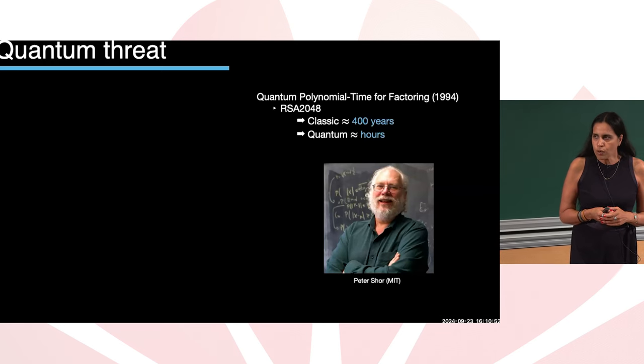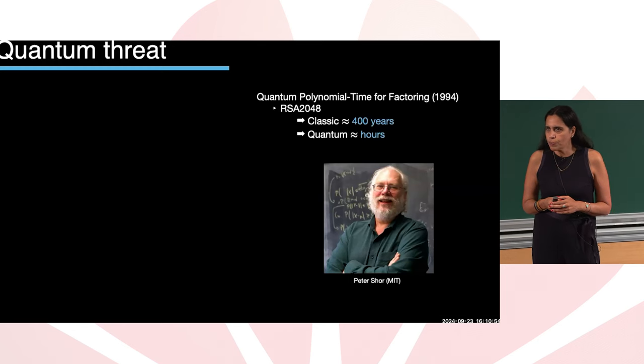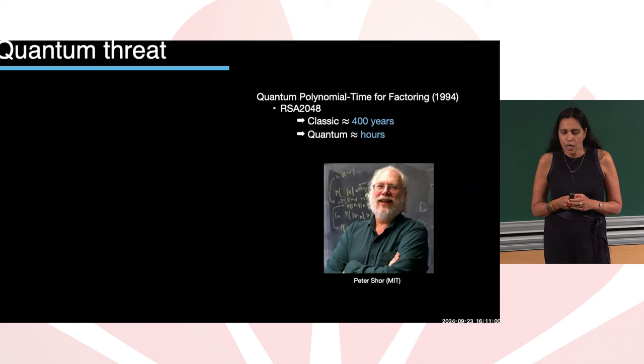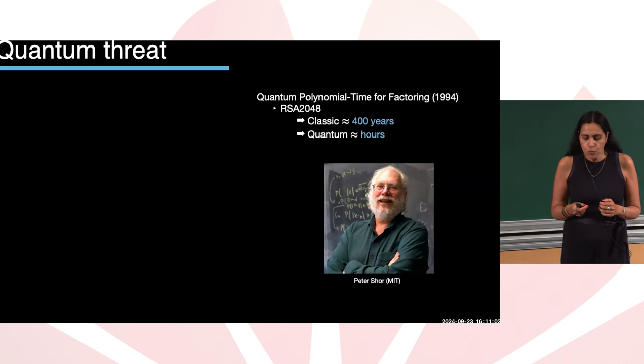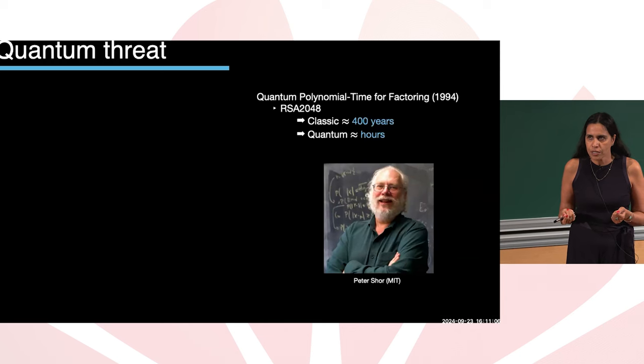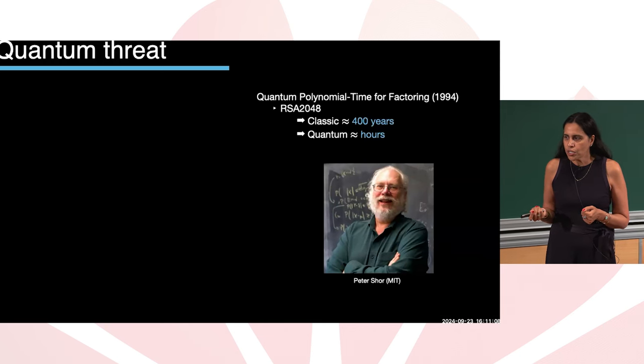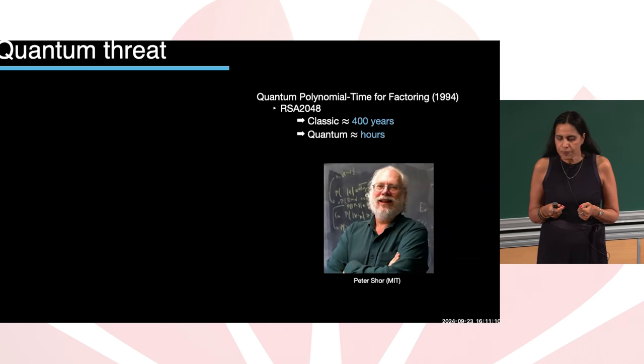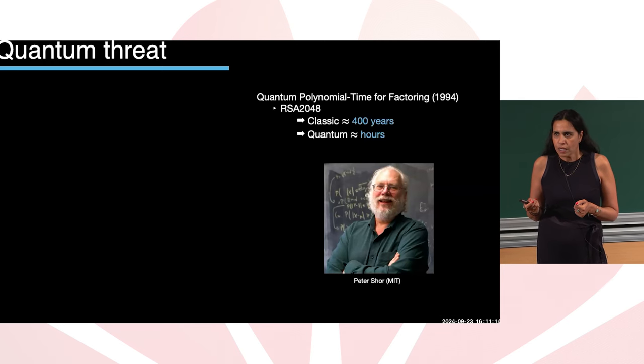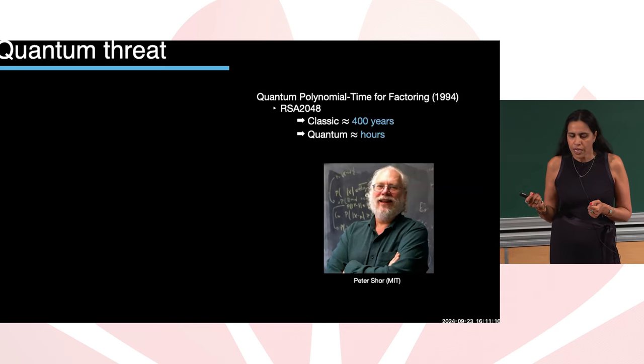In 1994 an MIT professor, Peter Shor, came up with a quantum polynomial time algorithm to basically break this RSA encryption, prime factorization, in about some hours.